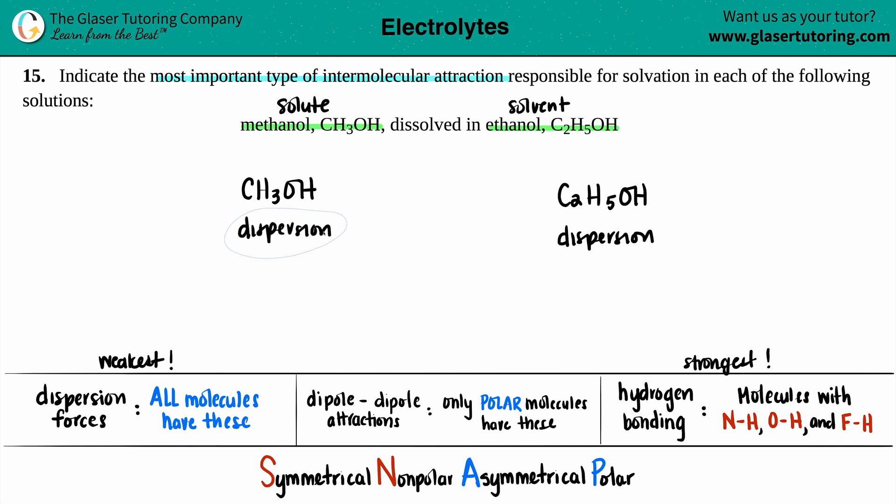Now I go on to the next one. Does methanol have dipole-dipole attractions? Well, only polar molecules have these. And if we remember our acronym SNAP, the polar molecules are always asymmetrical. So no symmetry. We can draw the Lewis structure out, but maybe we could do a quick version, especially if we see a molecule.